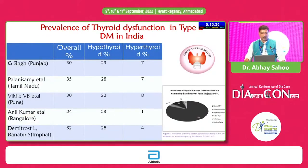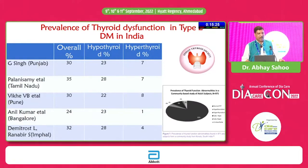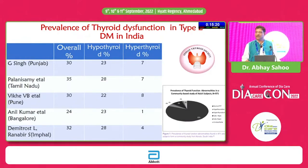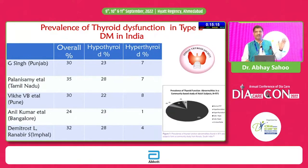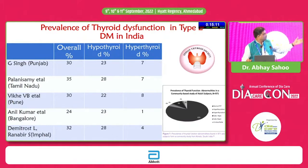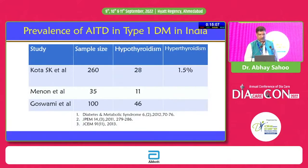Studies from India show that hypothyroid is of much higher frequency compared to hyperthyroid among diabetics, but both hyper- and hypothyroidism are found significantly higher in diabetes compared to the general population. These Indian studies confirm this association clearly.